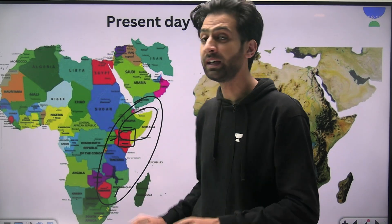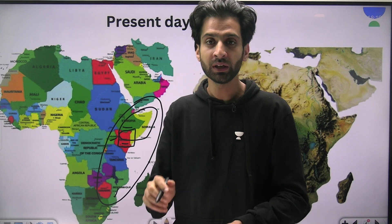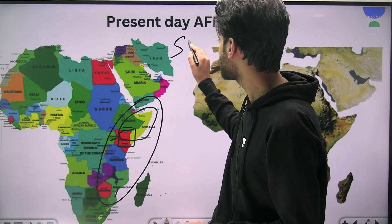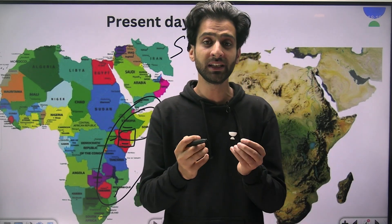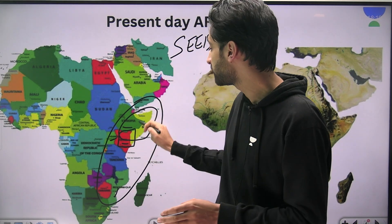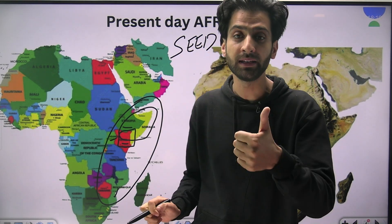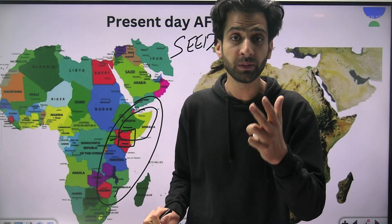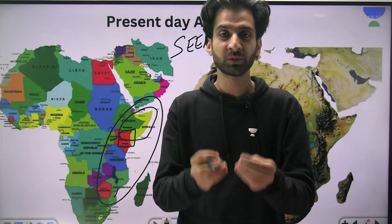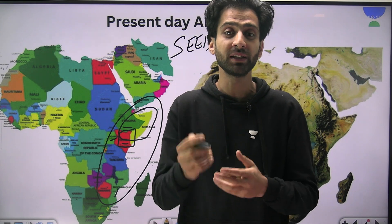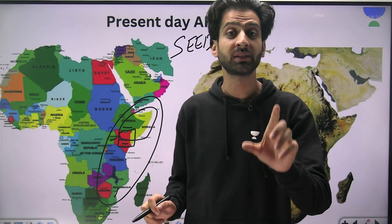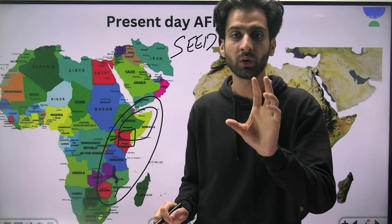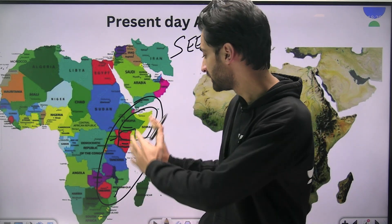This area is called the Horn of Africa, and it has four countries. You can remember them with the mnemonic SEED: Somalia, Eritrea, Ethiopia, and Djibouti. Most of you might ask why Djibouti starts with D but is in a mnemonic for SEED — that is just how you remember the Horn of Africa. So the eastern part is the Horn of Africa.